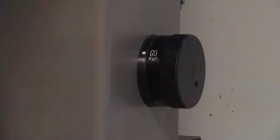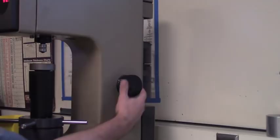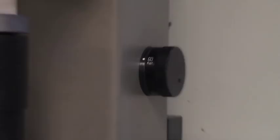A dial on the right side of the machine will change the load. This load should match whatever scale you selected. For R, 60 kg is appropriate.